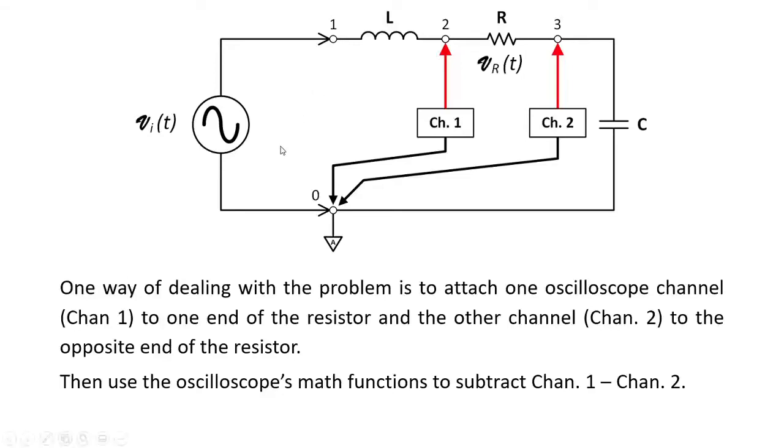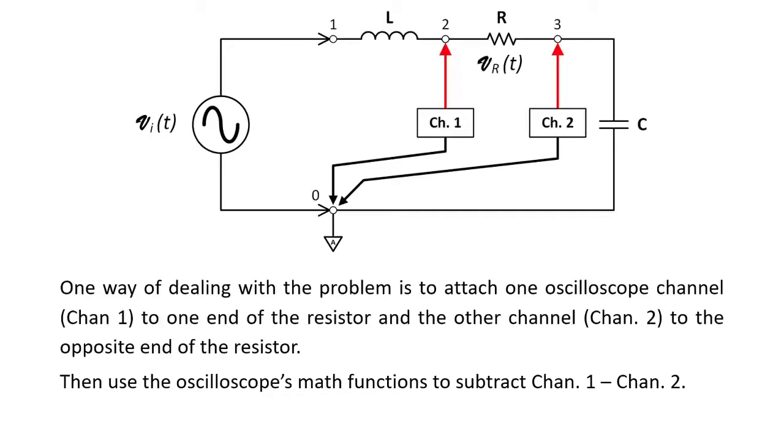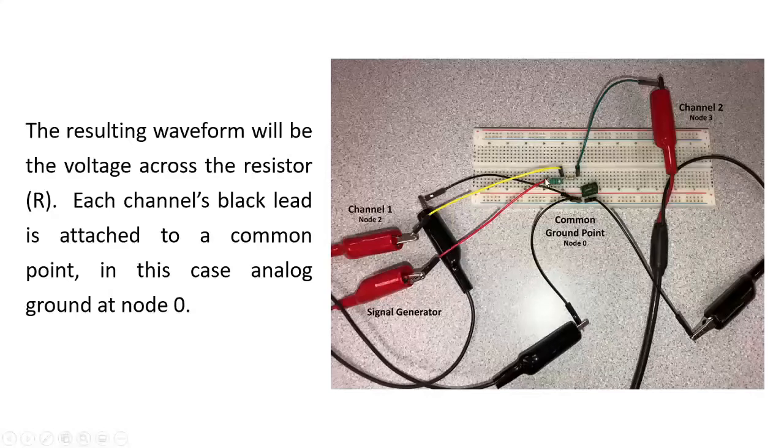Most digital oscilloscopes now have some form of math feature where you can subtract the channels. To do that, you would take channel one of the oscilloscope and hook it up to, in this case, we'll call it node two, or one end of the resistor. And then we would take channel two and hook it up to node three, the opposite end of the resistor. Then you would go to the oscilloscope's math features and say you want to subtract channel two from channel one. Here's a circuit that I wired up to do it. We have the signal generator going in to the circuit, that's our inductor. I have channel one of the oscilloscope hooked to one end of the resistor, channel two hooked up to the other end of the resistor. And as you see, all the black leads, two including the signal generator leads, are all wired to the common ground point.